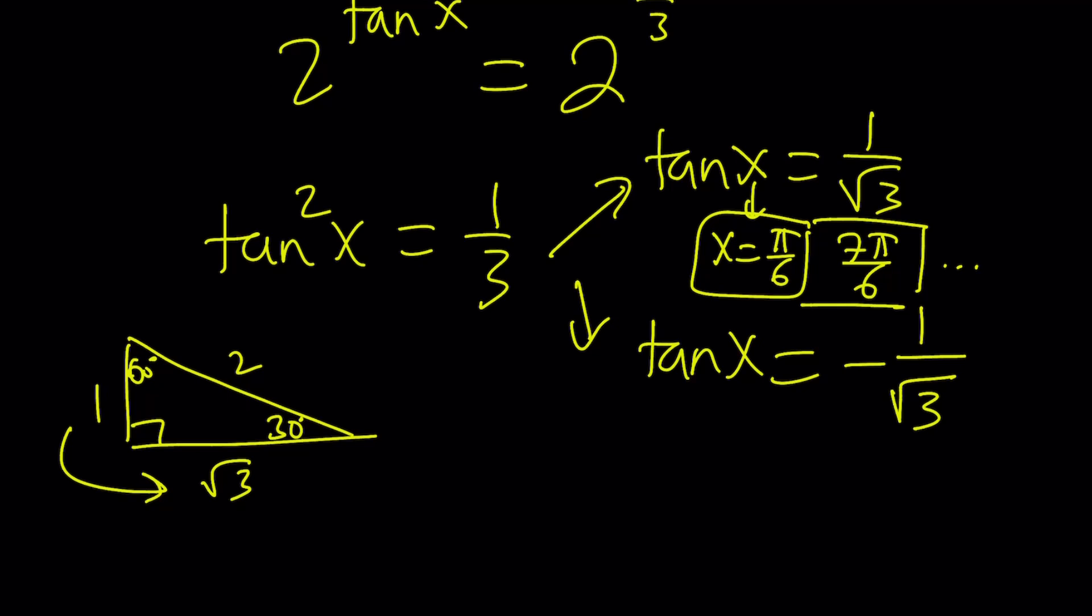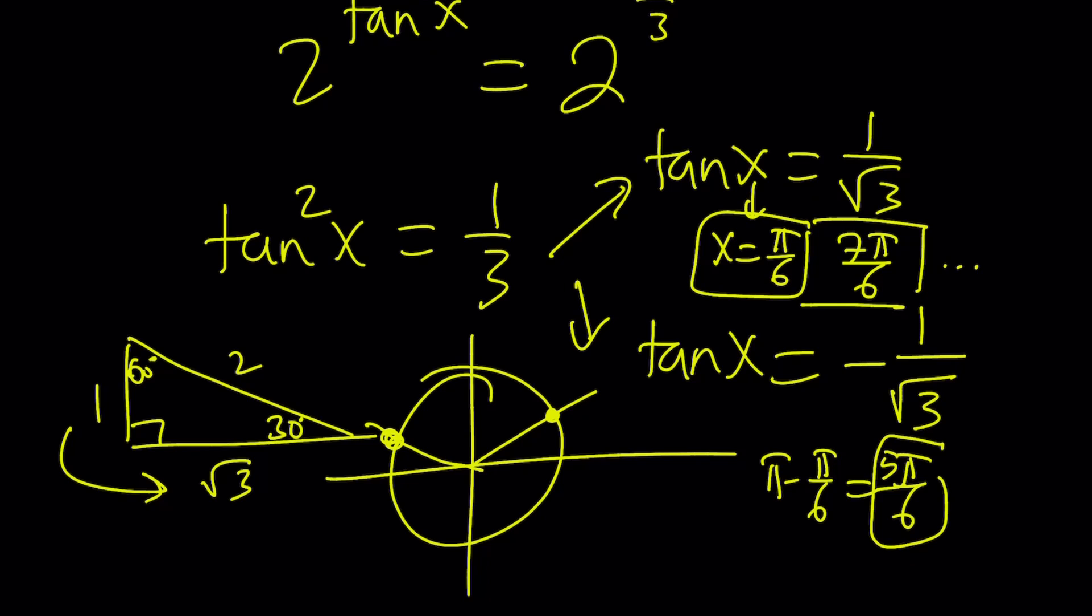For negative one third, let's take advantage of the unit circle. Since we have the π over 6 here, something like this, and I want that to be negative, I would just reflect it, right? So this is going to be one of the values, and that is going to be π minus π over 6, which is 5π over 6, right? So that's going to give you the other x value from the second equation, and obviously, by adding a π to it, we're going to get 11π over 6, which is going to be another solution between 0 and 2π.